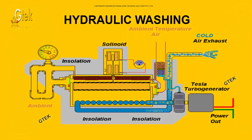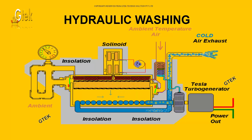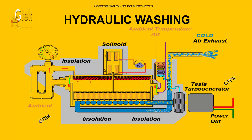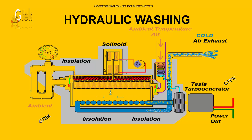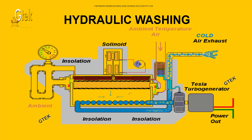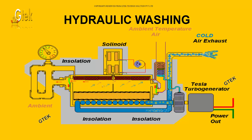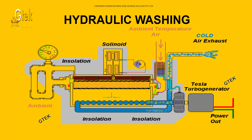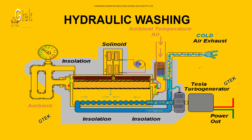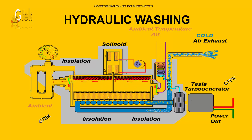Here is the overall design of hydraulic washing. You are able to see there is a pressure which enables the hydraulic washing. Washing through water and also the pressure. Here is the air — the air exhaust is here, and there is a turbo generator, and here is the hydraulic pressure which is given.